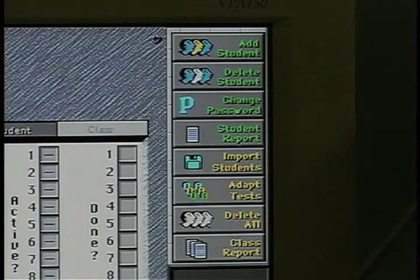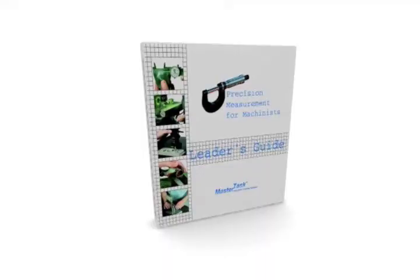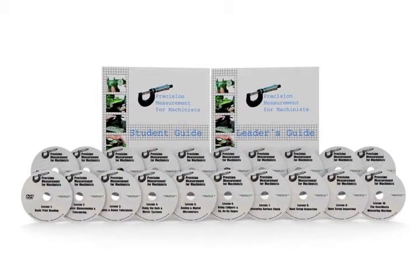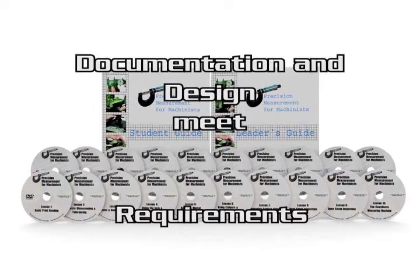The computerized record keeping system, along with the leader's guide, provides all of the resources your supervisors need to administer the course. The systematic approach to training the course provides and the documentation it produces helps your manufacturing clients meet ISO 9000 criteria.